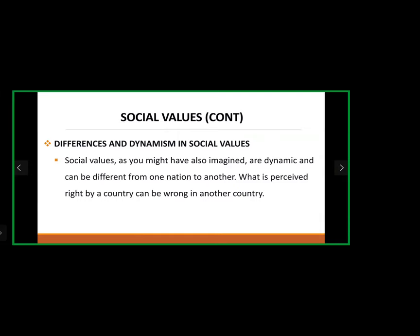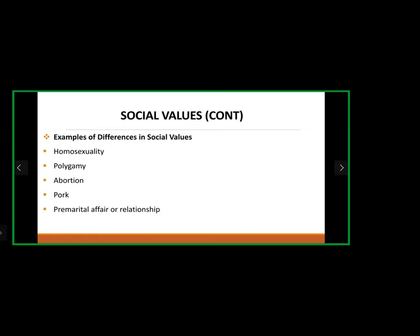Social values are dynamic and can differ from one nation to another. What is perceived as right in one country can be wrong in another. For example: homosexuality is illegal in Nigeria but legal in many European and American countries. Polygamy is legal in most African countries but illegal in most European countries.